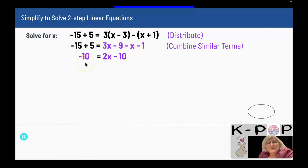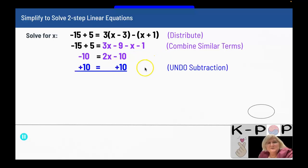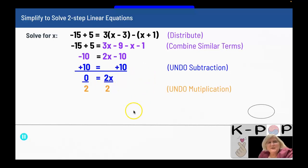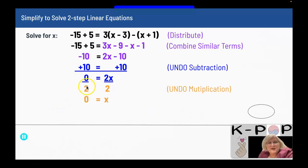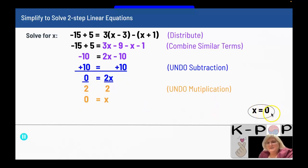Now it's in the form of y equals mx plus b. I need to get rid of the minus 10 on the right side, so I add 10 to both sides, giving me 0 equals 2x. Then I divide both sides by 2. Zero divided by 2 is 0 — you can't have 0 on the bottom, but you can have it on top. So x equals 0 is my final answer.